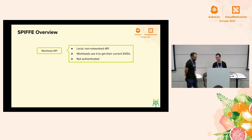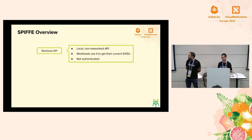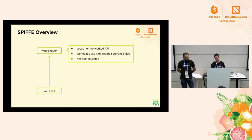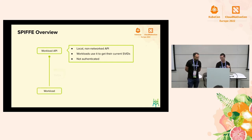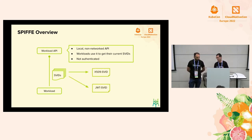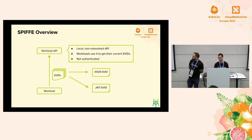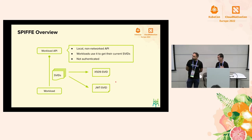The Workload API has an important attribute: it is not authenticated. Workloads don't need any kind of secret or password to call it. They will get an identity based on a workload attestation mechanism and will receive their SVID. SVIDs can be in two formats: the X.509 SVID, which is basically an X.509 certificate, and a token-based SVID called the JWT-SVID.